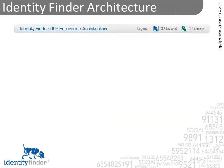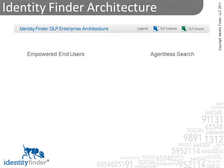Identity Finder's architecture is flexible and can be configured to adapt to your unique business needs. Consider these two options: empowered end users and agentless searching. In either architecture, you have the option to centrally manage your deployment using the Identity Finder DLP Enterprise Console and receive centralized reporting from all devices throughout your entire enterprise network.